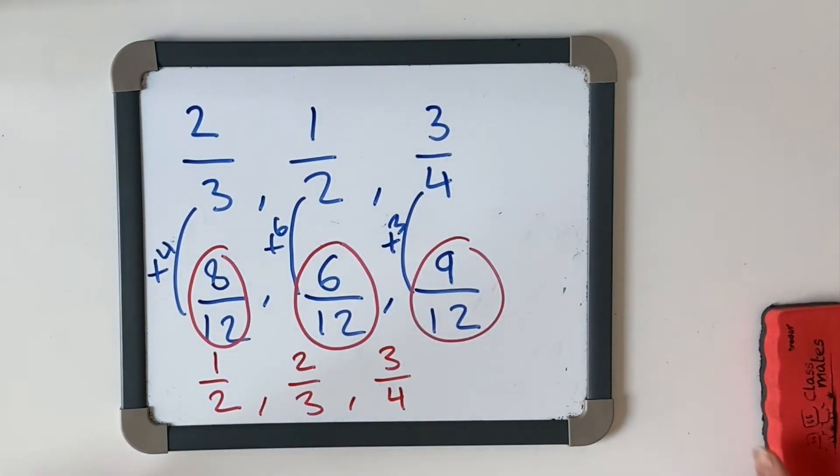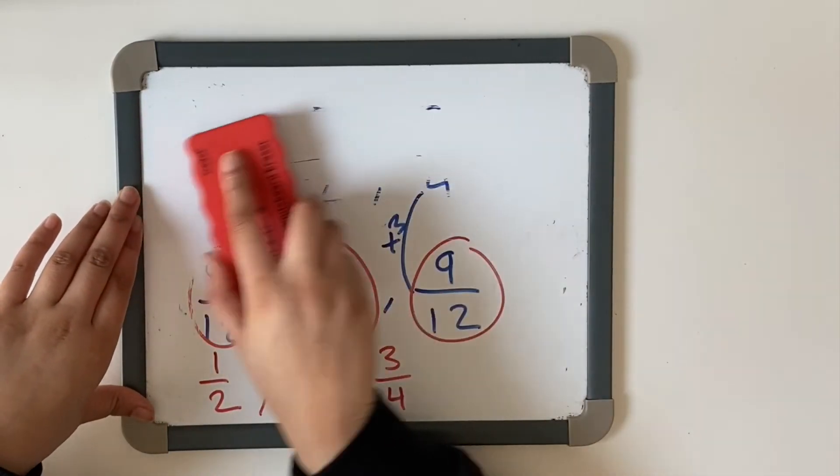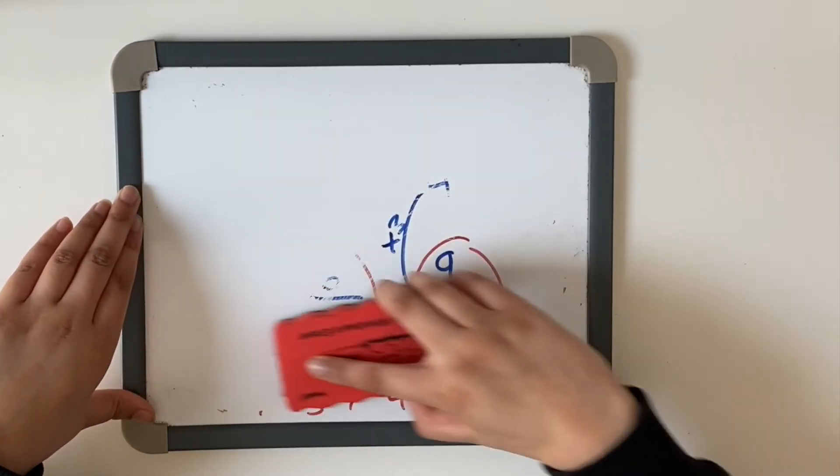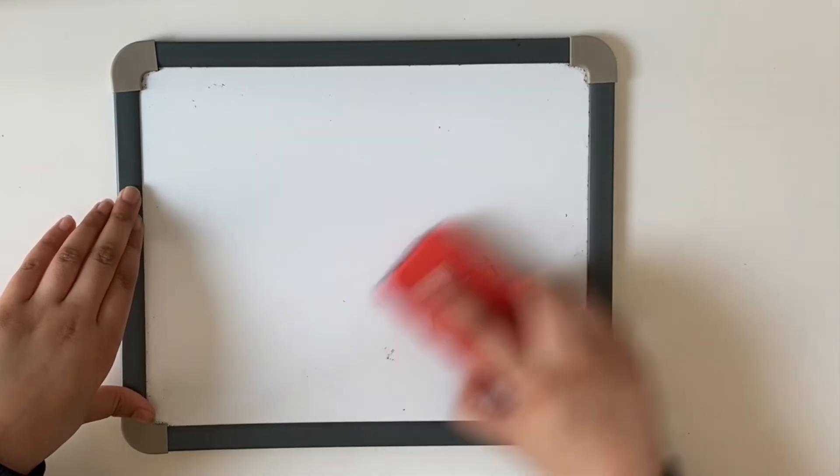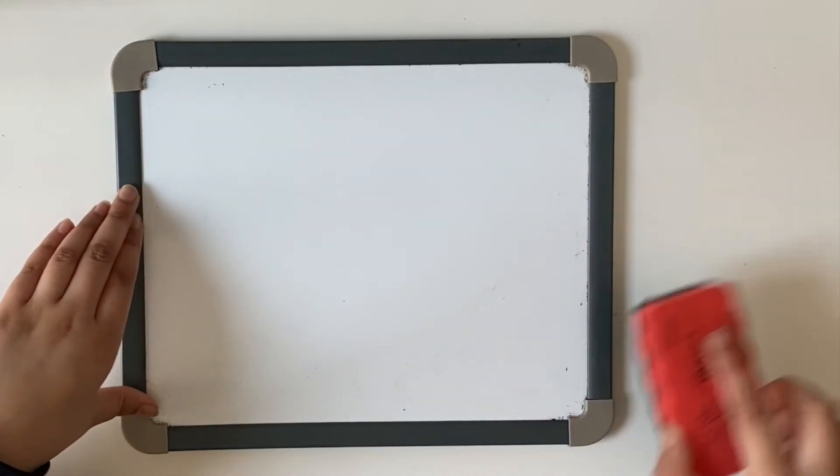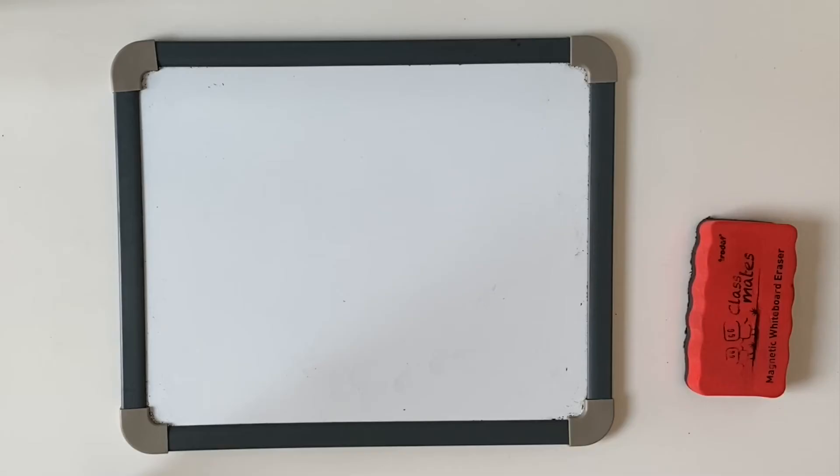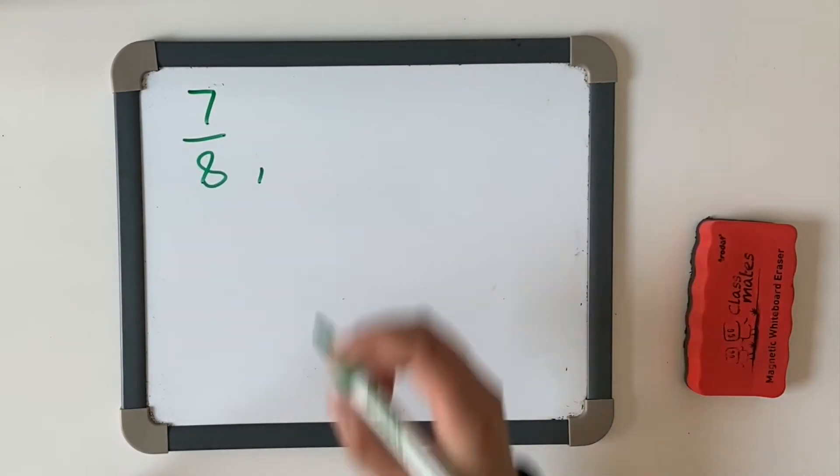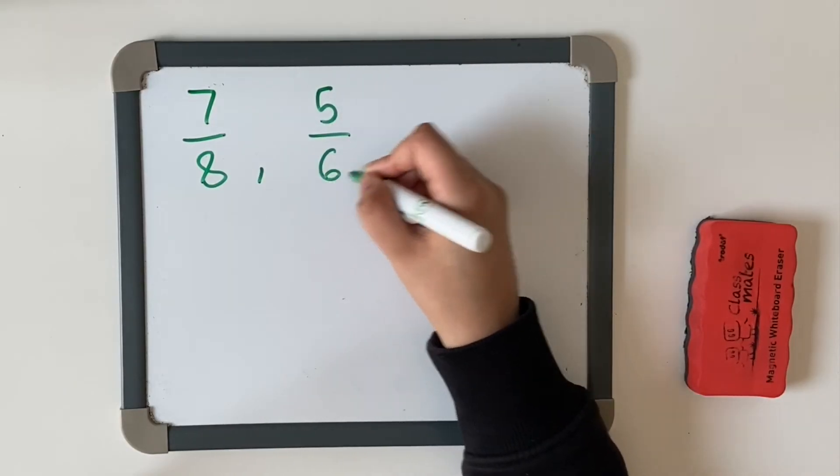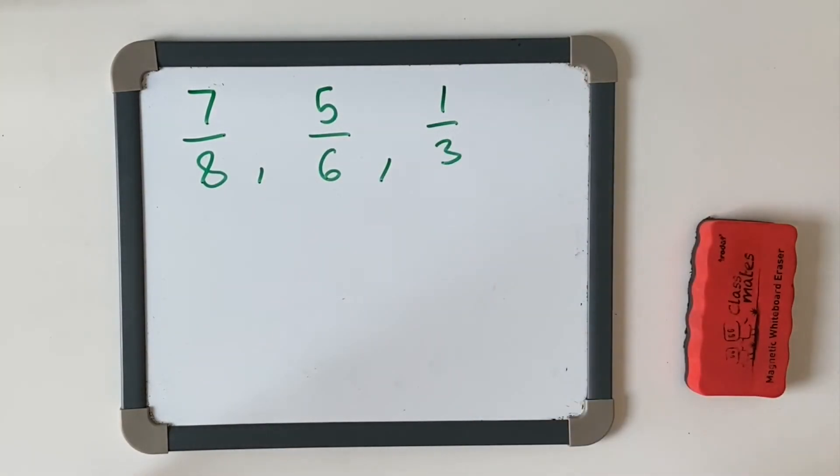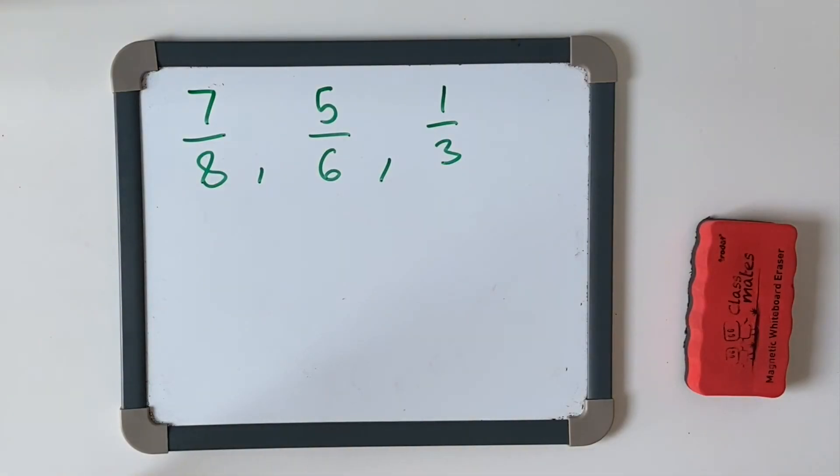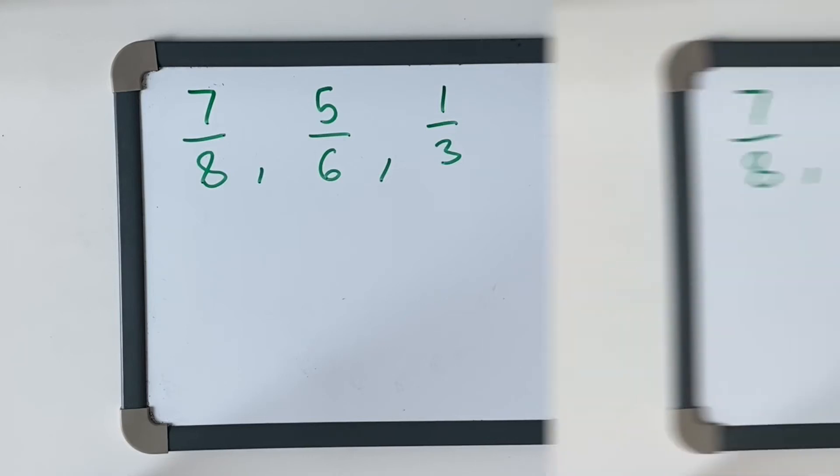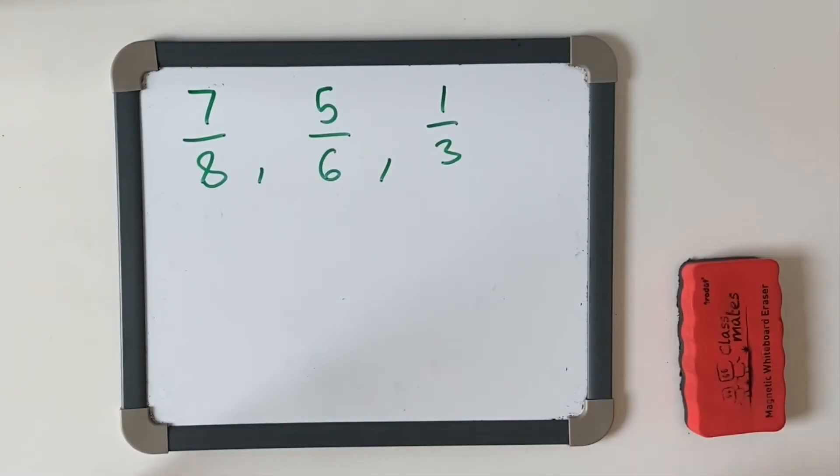We're going to have a look at one more example. And this time, I want you to have a go on your own. And let me know what you get in the comments. So this time, we're going to have seven-eighths, we are going to have five-sixths, and we're going to have one-third. Now, we need to find the same denominator. And in order to do that, we need to find the least common multiple.